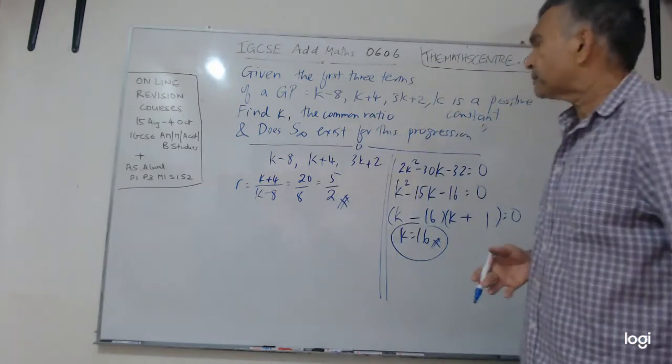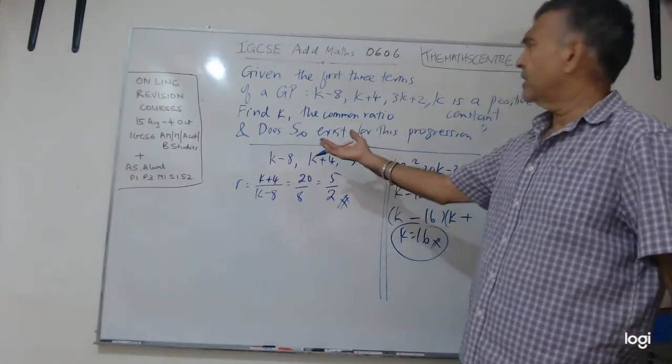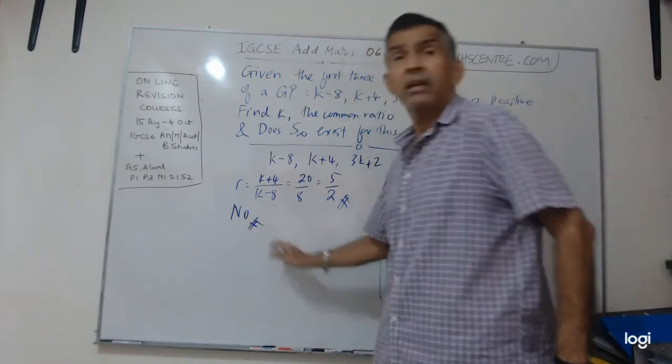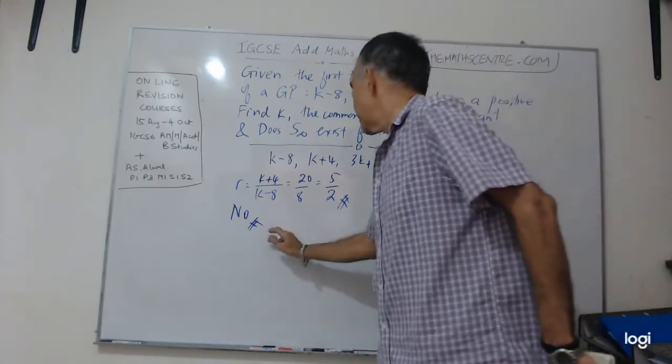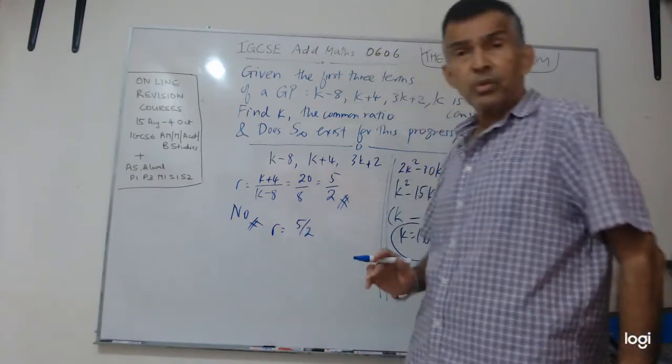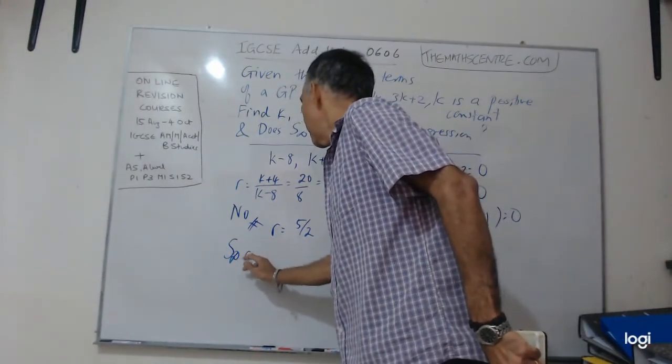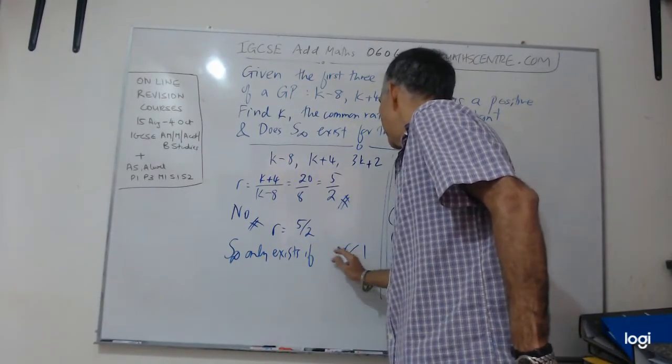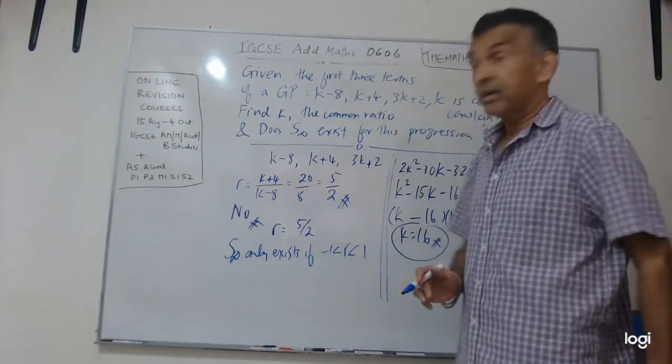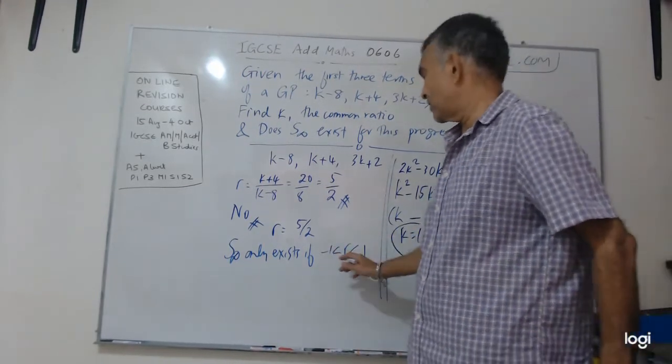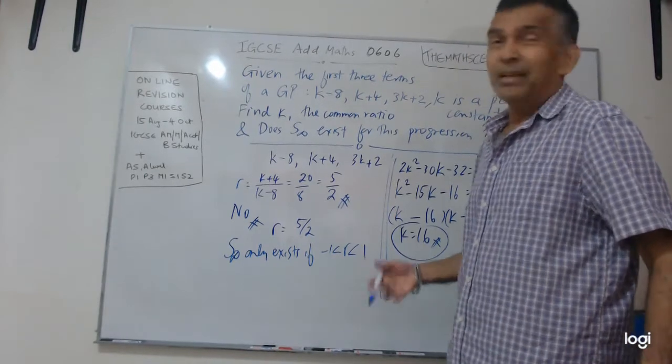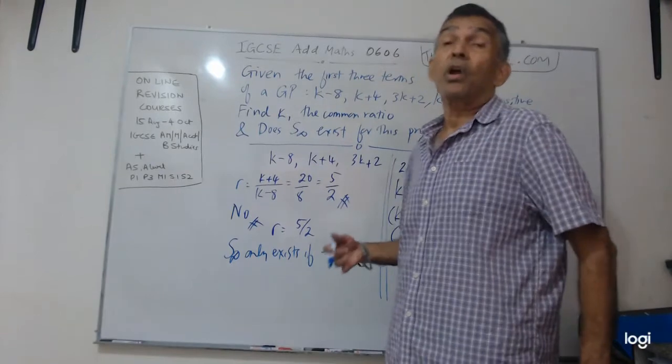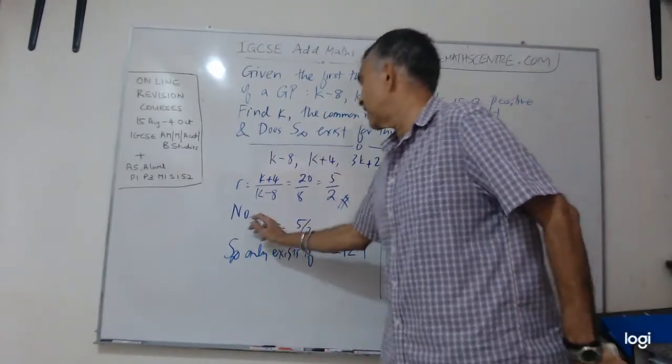We have got one more bit. Does S infinity exist for this progression? Let me write the answer. No. Why? Because my R here, my common ratio is 5 over 2. S infinity only exists if R is between 1 and negative 1. Remember, S infinity only exists if R, the common ratio is between 1 and negative 1. Basically, we are saying that only when R is between 1 and negative 1, this progression will converge. So does it exist? The answer is no.